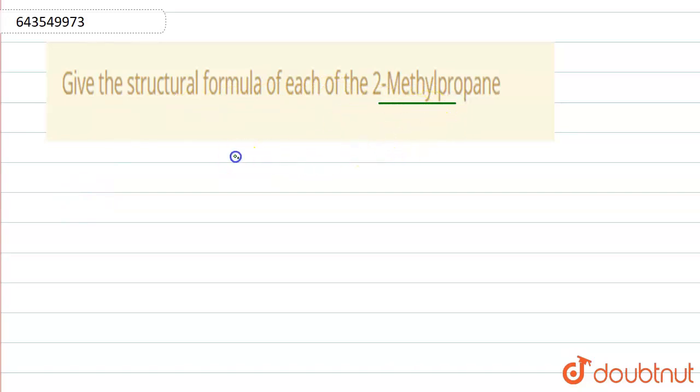2-methyl propane is actually part of the alkane hydrocarbons and its structural formula is: it is propane, that means three carbons are present, and on the two position one methyl group is also present.